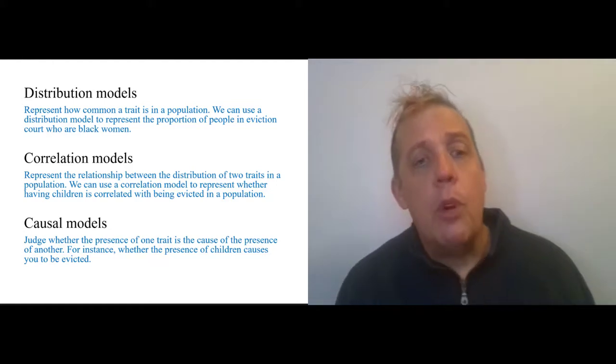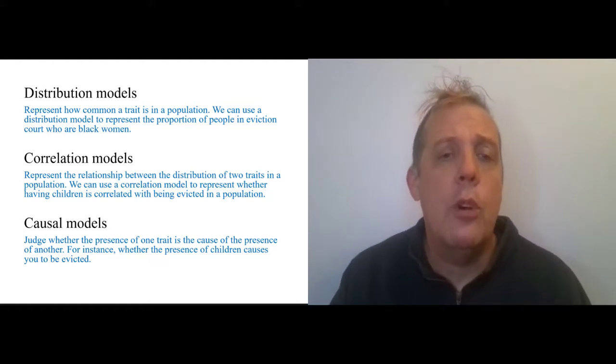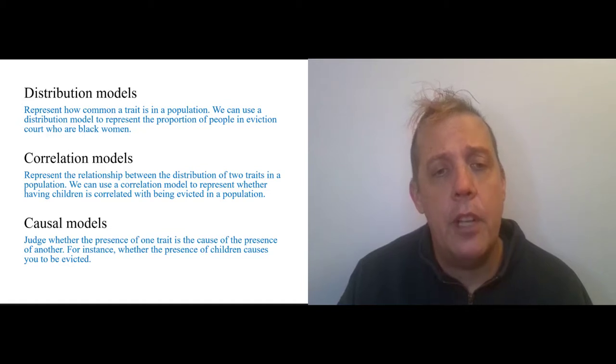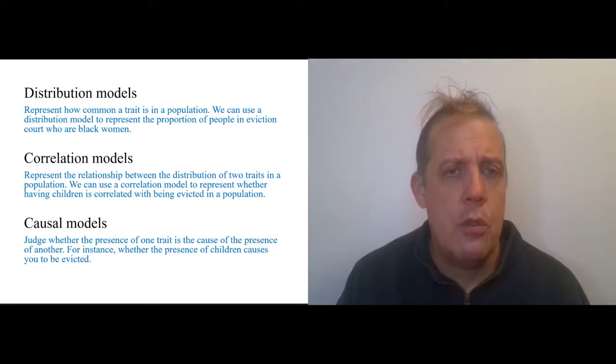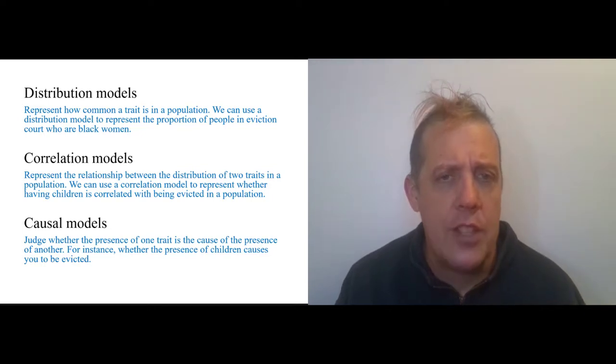Ultimately, what we're looking for—and we'll go into more detail about this in the next video—are causal models. Normally when you see statistics reported, what you see reported are correlations, and the correlation is just a difference between two numbers. The implication generally is that there is causation here, that the presence of one trait is causing the presence of another trait. We might think that the presence of children causes you to be evicted.